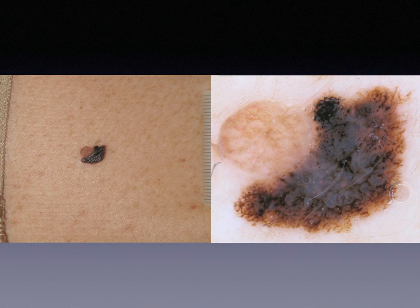In this case, the two components are clearly distinguishable clinically and dermoscopically. Here again, an asymmetric lesion clearly composed by two parts: the nevus component represented by a banal dermal nevus, and the melanoma component characterized dermoscopically by atypical network and irregular globules.